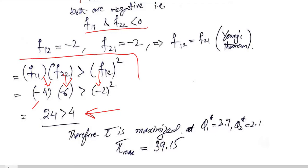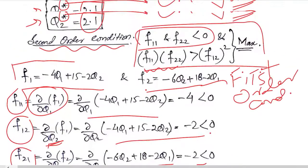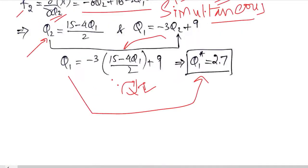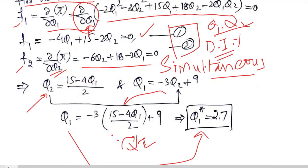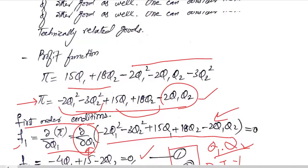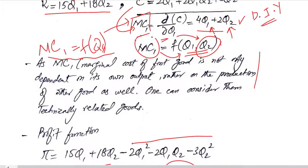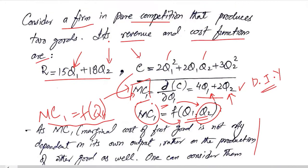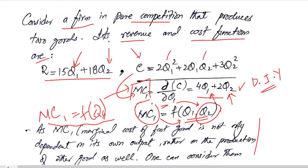So now we can find out the maximized value of profit at the critical values Q1 and Q2. These are the critical values, and when we substitute them in the profit function we will get the maximum value of the profit which will be 39.15 currency units. In this way we have found the maximized value of the profit function and the critical values for it. It was all done by using the second order condition and the first order condition. It was for a certain situation where the technical relation existed between the two outputs that were produced by the same firm. Thank you.